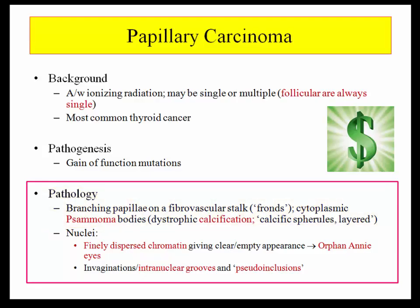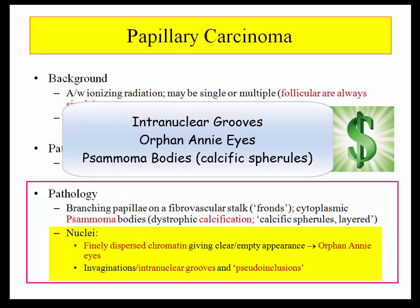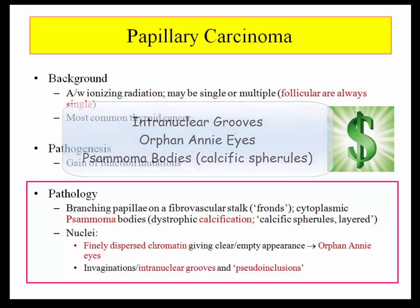The other key pathologic features are the nucleus descriptors. Finely dispersed chromatin that appears empty is described as orphan Annie eyes. That's characteristic, but the NBME tends to go after the more subtle and overlooked intranuclear grooves. They know you are focused on psammoma bodies and orphan Annie eyes, so they catch you napping on intranuclear grooves. The NBME does give you other bells and whistles such as radiation exposure and regional lymphadenopathy, so you can still sort it out without the grooves, but do be aware of this pathologic description in papillary carcinoma.